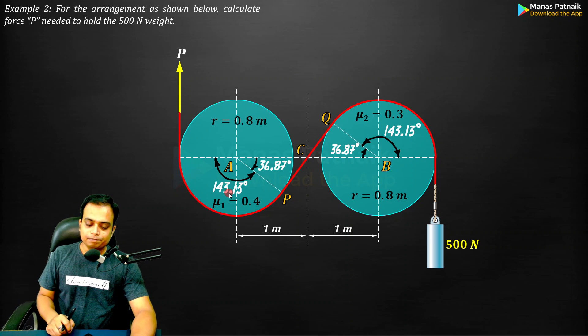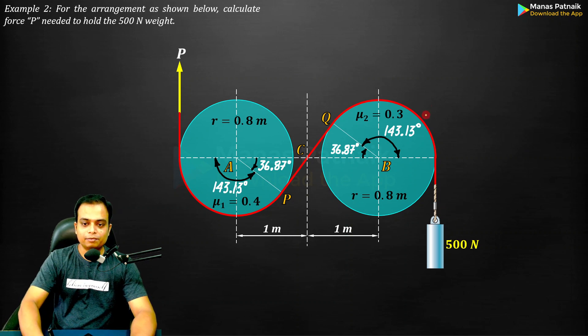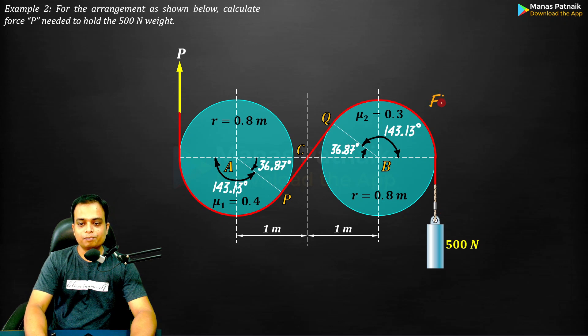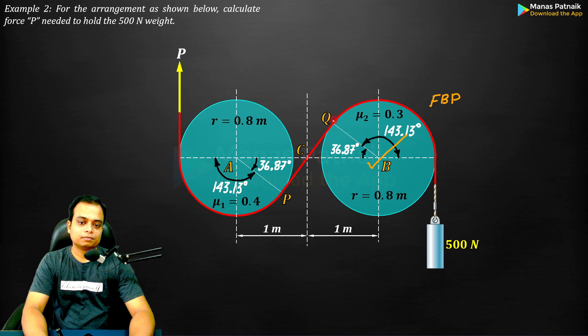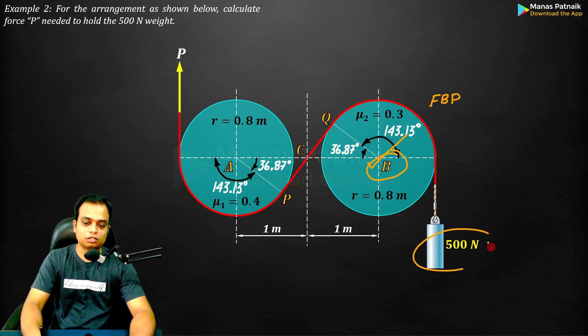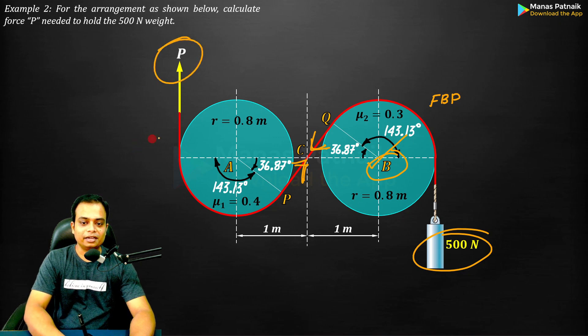Now let's start the mechanics. You should start by creating the free body diagram of this portion of the belt which is wound over drum B. The reason is very simple: you know this value, you can calculate this. Once you know this, you can get that.